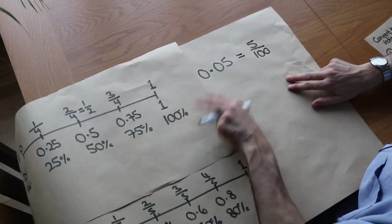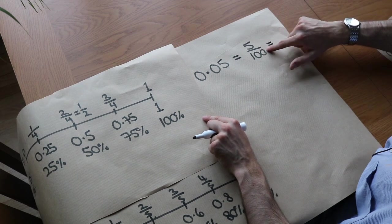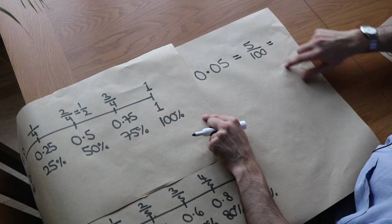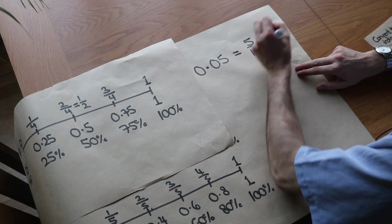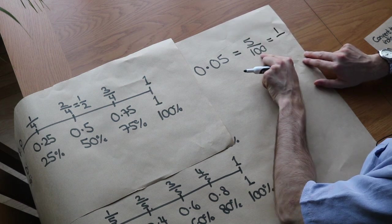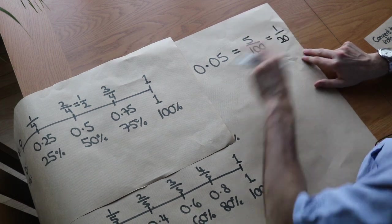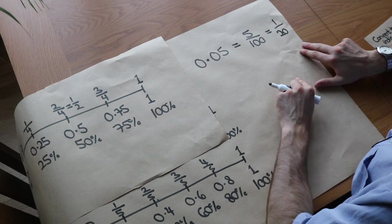But we could simplify that fraction. We see, what can we divide top and bottom by? Well, they both divide by five. So that divide by five is one. A hundred divided by five is 20. So 0.05 would be a twentieth.